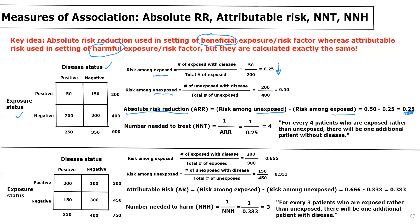Because the exposure or risk factor was beneficial and we were doing an absolute risk reduction calculation, we would then use the number needed to treat equation. So this is 1 divided by the absolute risk reduction — 1 divided by 0.25 — which equals 4. The interpretation of this is that for every four patients who are exposed rather than unexposed, there will be one additional patient without disease, so one additional patient will benefit. Beneficial exposure or risk factor, shown by the fact that risk is lower among the exposed than the unexposed, means we're dealing with absolute risk reduction and number needed to treat.